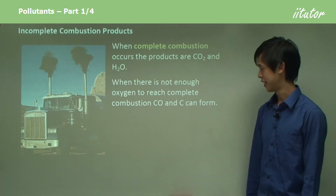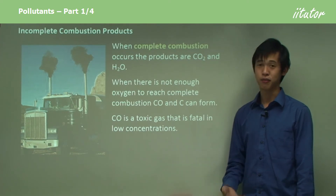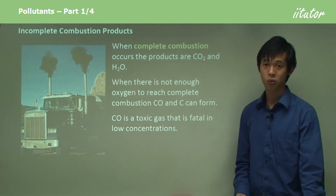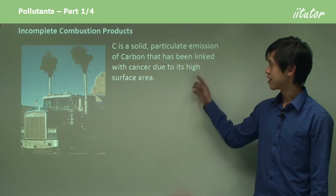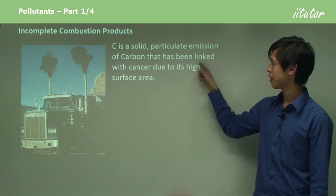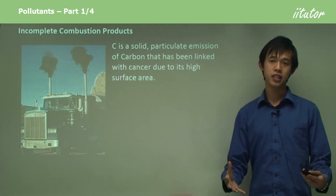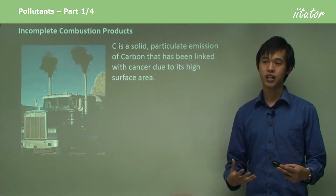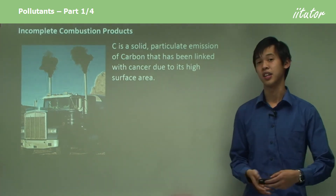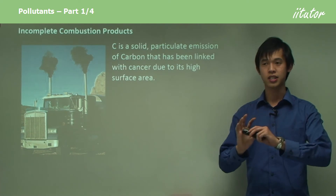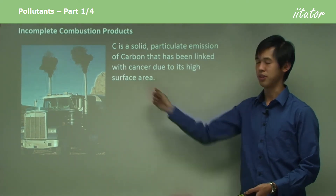CO is a toxic gas that is fatal in fairly low concentrations — we spoke about why in the last lesson: it bonds to hemoglobin. And C is a solid particulate emission of carbon that has been linked with cancer due to its high surface area. The carbon particulate is carcinogenic because it can interact with our DNA, causing cancers to occur — and that's due to its high surface area.